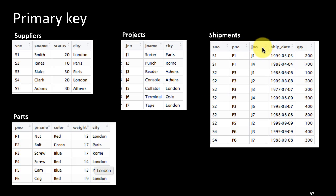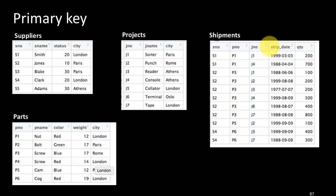The combination of supplier number, part number, and project number could be a primary key, but then again the same supplier may supply the same part to the same project many times. For example, a supplier might deliver a part to a project on January 1st and again on March 1st in different or even the same quantities. If we assume the same supplier won't make a shipment on the same day twice, then the combination of all four columns uniquely identifies a shipment. This is an example of a table where the primary key is not a single column but a combination of columns.